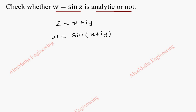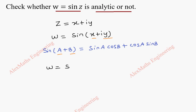We are going to apply the sin(a+b) formula. When it is sin(a+b), it is sin a cos b plus cos a sin b. In place of a we have x, and b we have i y. So w is going to become sin x cos(i y) plus cos x into sin(i y).